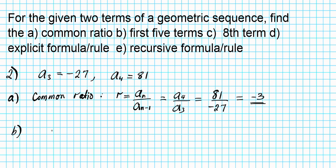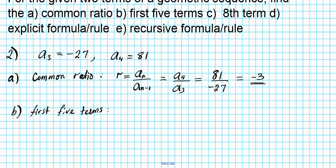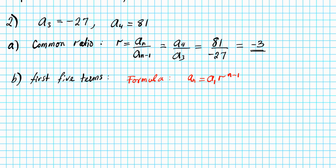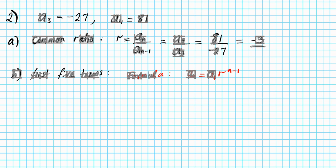Part B: find the first five terms. There's a shortcut since we're close to the first term, but I want to show you how to carry out the procedure using the formula — because for more complicated problems, you can still solve it without using tricks. The formula we'll use is the nth term formula: Aₙ equals A1 times R to the n minus 1. We need to start by finding the first term.